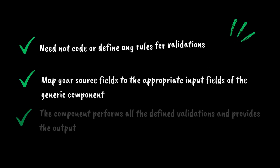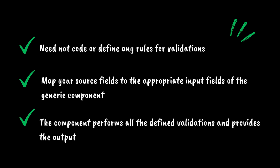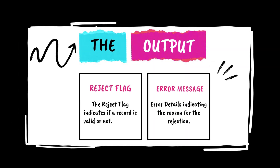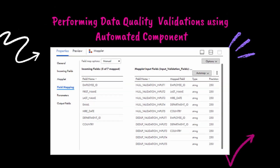This component can be used across mappings for data quality check validations where you need not code or define any rules for validations. All you need to do is map your source fields to the appropriate input fields of the generic component. The component performs all the defined validations coded within it and gives the result indicating if the record is valid or not and the error message indicating the reason for the rejection. The output provides a reject flag indicating the record's validity and an error message explaining the reason for rejection. The image here shows that we are performing null validations on five input source fields and a deduplicate validation on a composite primary key, which is a combination of three fields, using the automated generic component.